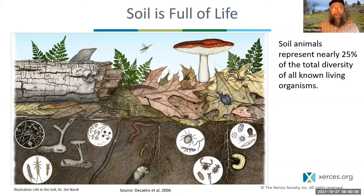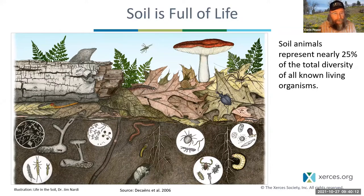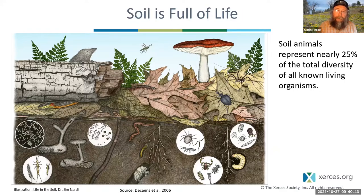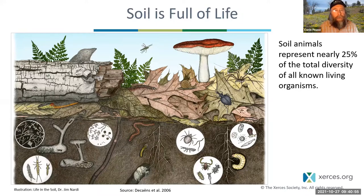As you heard from Stephanie earlier, soil contains a vast diversity of life. Nearly 25 percent of all organisms on the planet are soil animals. These animals range from microscopic to quite large. The smallest soil animals — nematodes, tardigrades, rotifers — live in water films on the surface of soil particles. The mesofauna, the medium-sized micro-arthropods and potworms, live in pores within the soil. The macrofauna — arthropods, mollusks, annelids, crustaceans — live within burrows or spaces they excavate for themselves, or just in the surface litter.